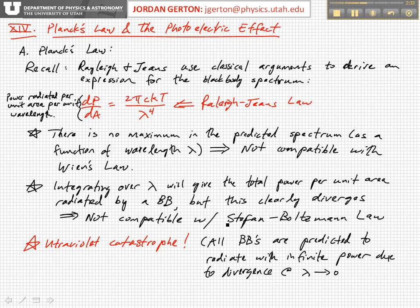The integral diverges because at very small values of λ — corresponding to ultraviolet or even shorter wavelengths — this quantity gets very large and diverges. This was called the ultraviolet catastrophe, and it basically predicted that all blackbodies would radiate an infinite amount of power, particularly in the ultraviolet, where λ is small.